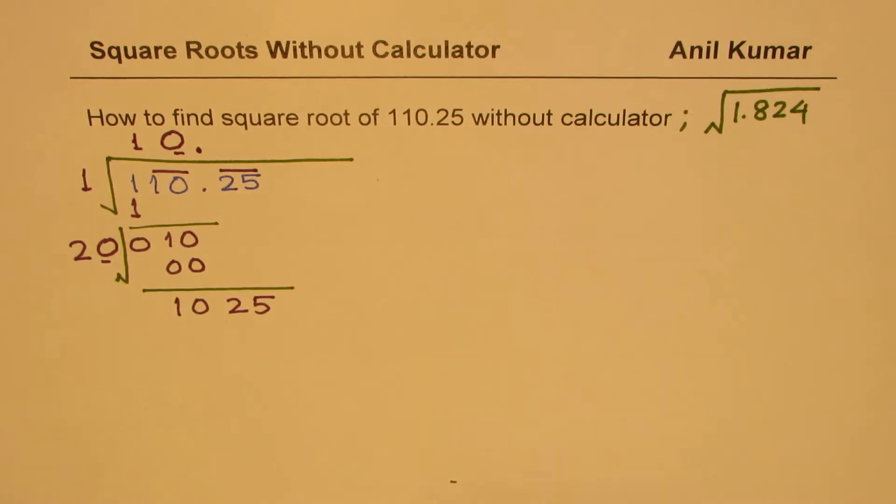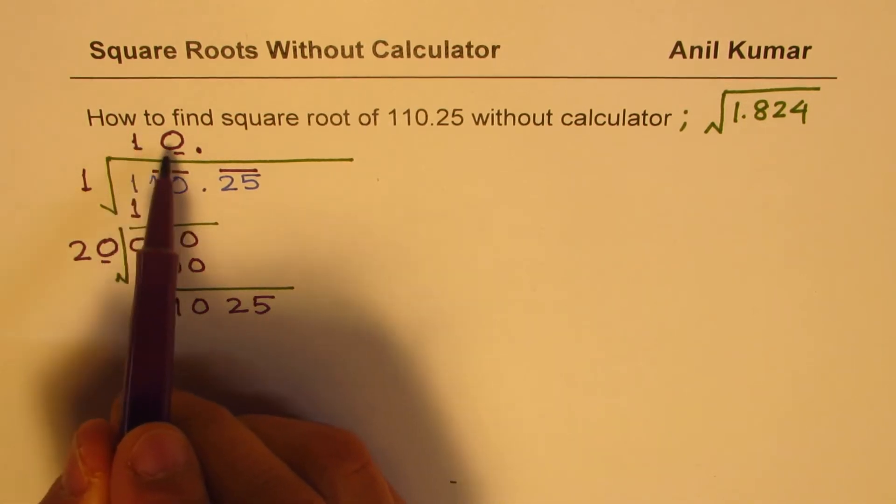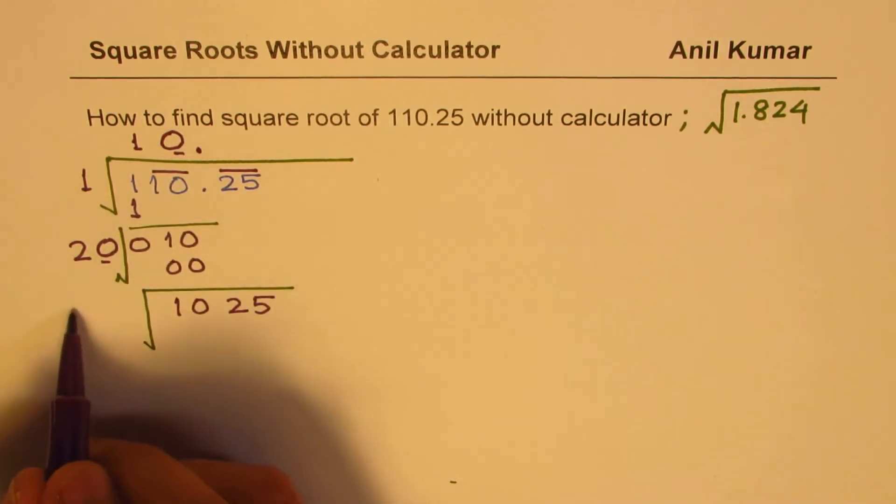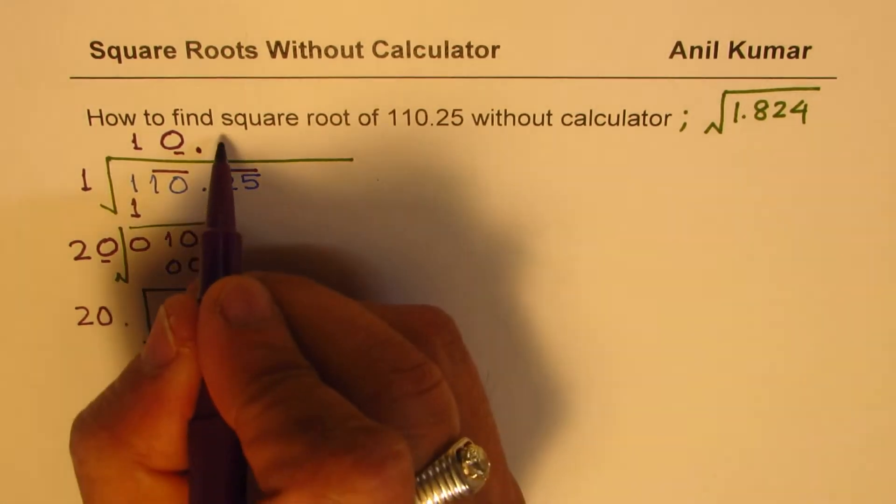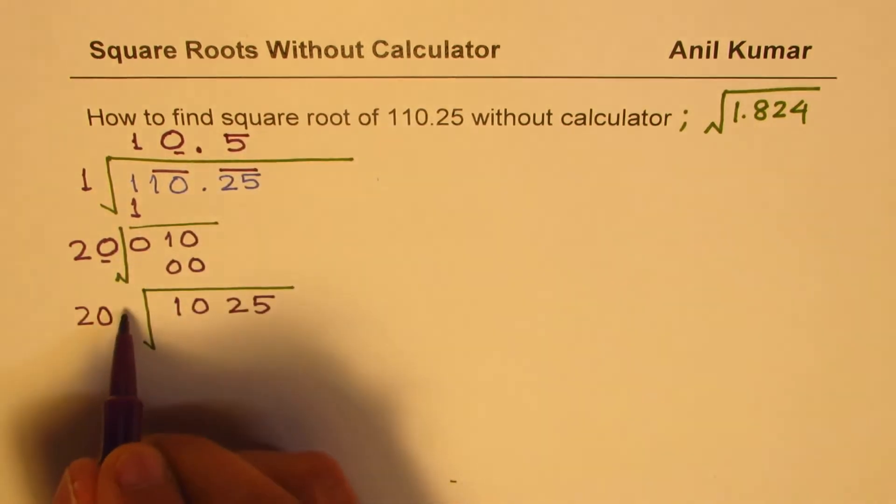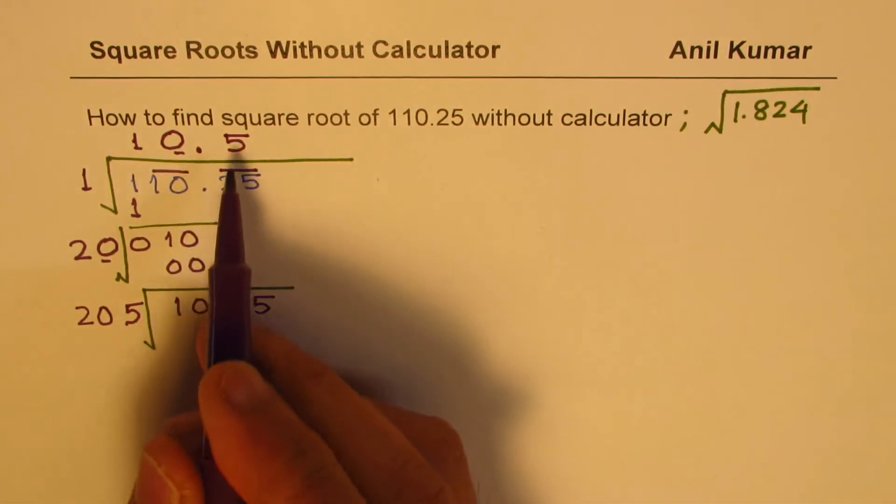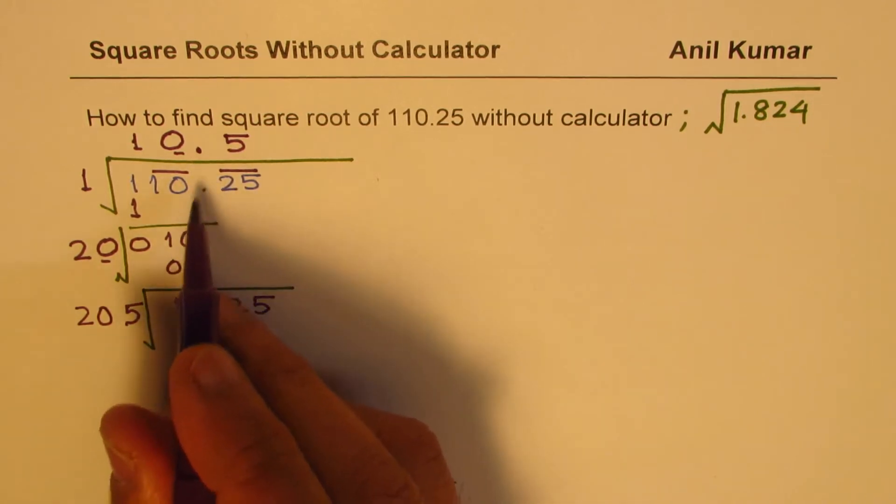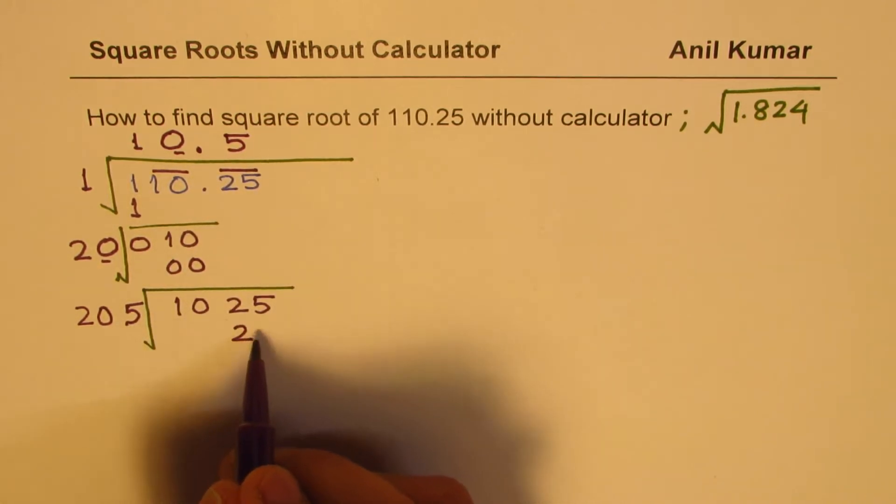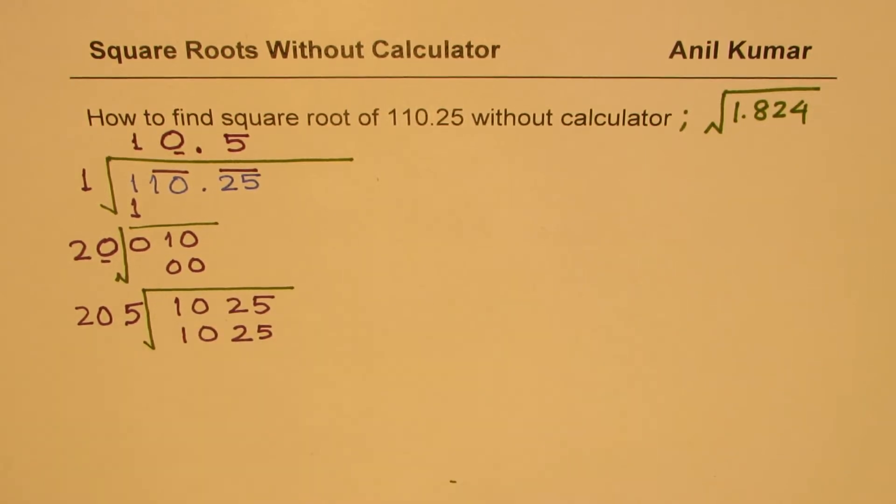Since we are working with the number after decimal place, I will have to write a decimal there. Now again, the divisor should be twice the quotient, so it is 20. Next number to put here should be 5. So the same number goes in the quotient as in the divisor. Now when you multiply, 5 times 5 is 25. And 5 times 2 is 10.